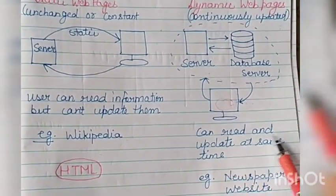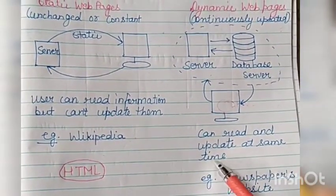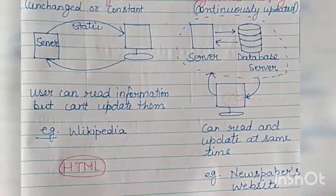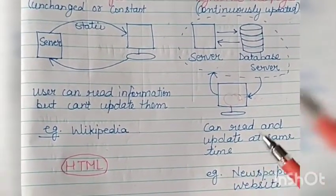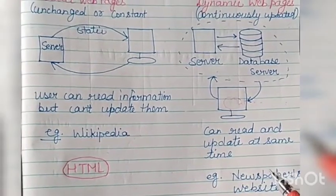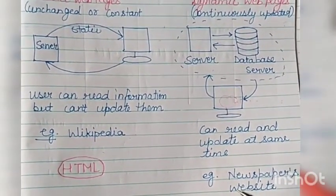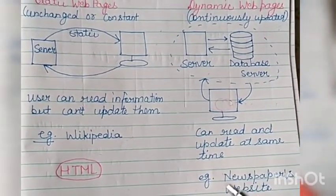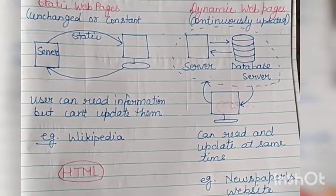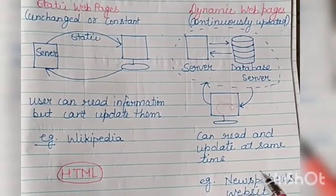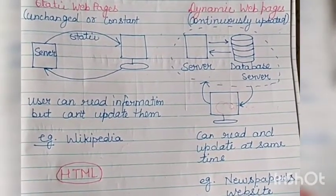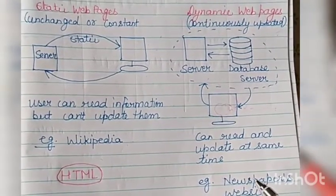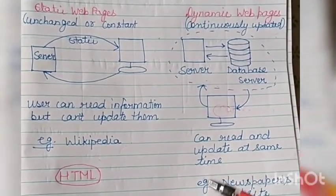The web page you requested on the first day is different, and the second day that web page is different, because it has been updated by the developer or the user. The user can read and update at the same time. For example, you have seen the website of Flipkart. Whenever you visit Flipkart, do you see the same product at the same price every day? No — the product may be the same but the price may be different, or it may be sold out or out of stock.